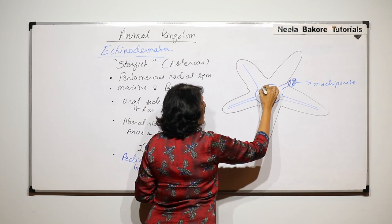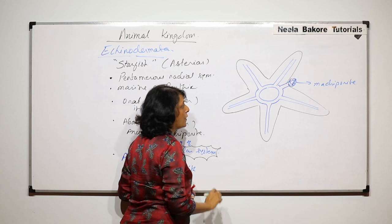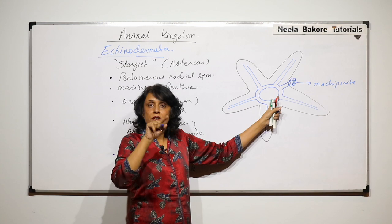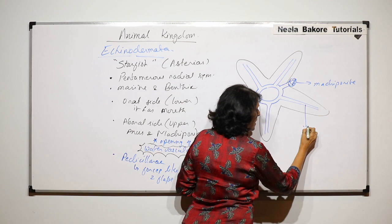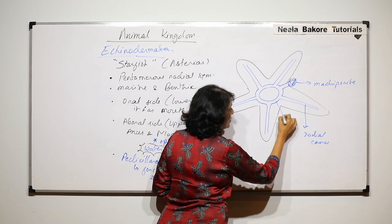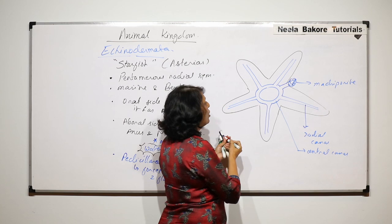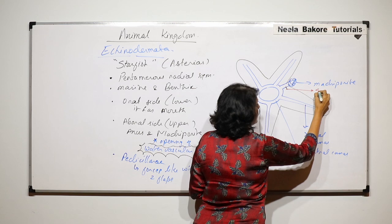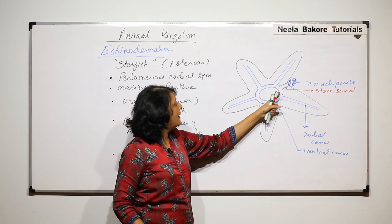The tubes going into each arm are called radial canals, and the one in the center is the central canal. So from the madreporite, water enters and goes into the circular central canal. From this central canal arise five radiating radial canals. There is also a small tube from the madreporite to the central canal known as the stone canal.